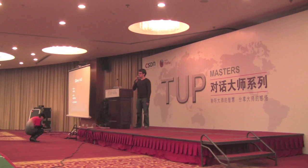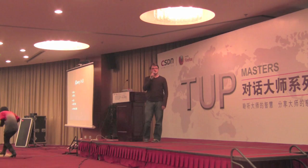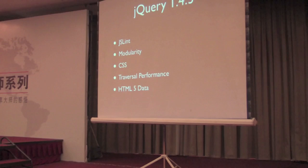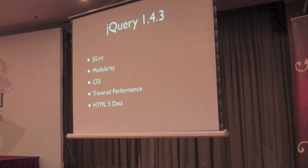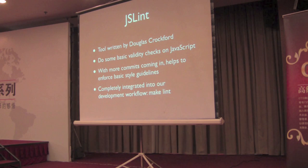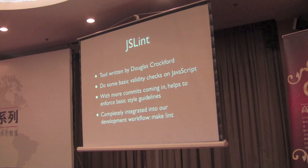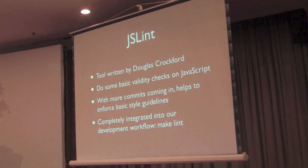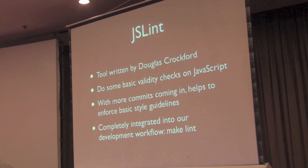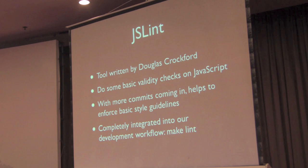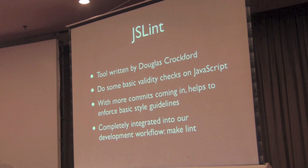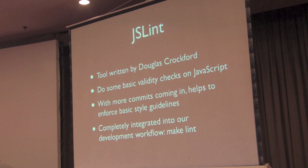jQuery 1.4.3, we just released about a month ago now. We released it at the jQuery conference in Boston, and we worked on a number of different features to try and improve the internals of jQuery. One of the things we worked on in particular was making sure that jQuery passes what's called JSLint. JSLint is a tool written by Douglas Crockford that allows you to validate your JavaScript code. It has some validation in it, making sure you're not writing improper JavaScript, but it also has checks that help you write good quality code. This is important for us since we have a lot of contributors to jQuery, and we want to make sure that the code quality is consistent.